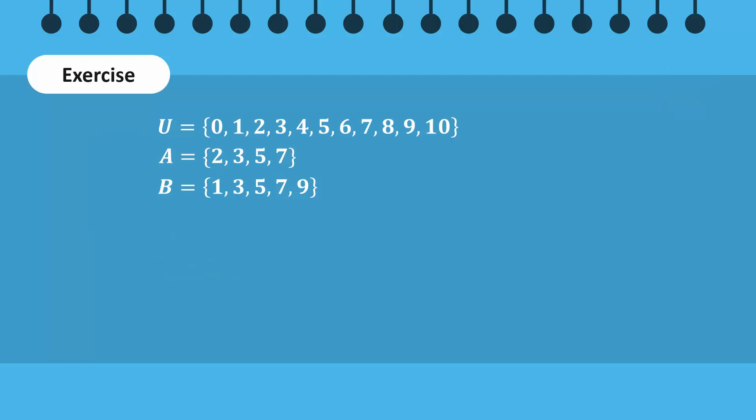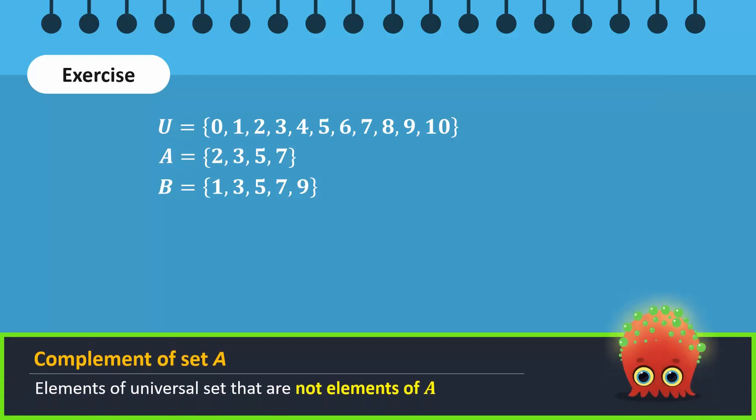Let's review them now. To find A complement, we'll consider all the elements in the universal set that are not in set A. So, we take out the elements 2, 3, 5, and 7 from the universal set.